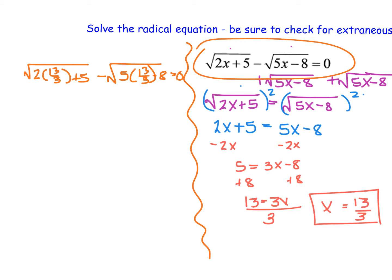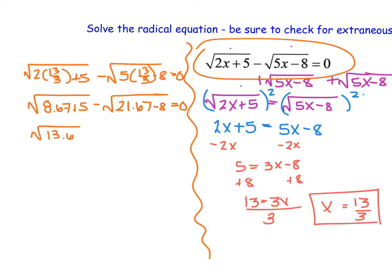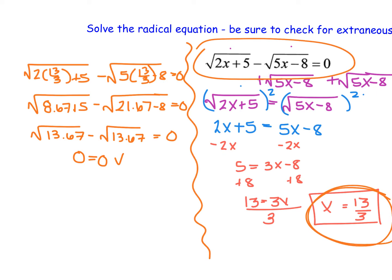Using a calculator, 2 times 13 over 3 is approximately 8.67, so we get the square root of 8.67 plus 5, minus the square root of 5 times 13 over 3, which is 21.67, minus 8. That gives us the square root of 13.67 minus the square root of 13.67, which equals 0. So this does in fact work, and our answer is a true solution — it is not extraneous.